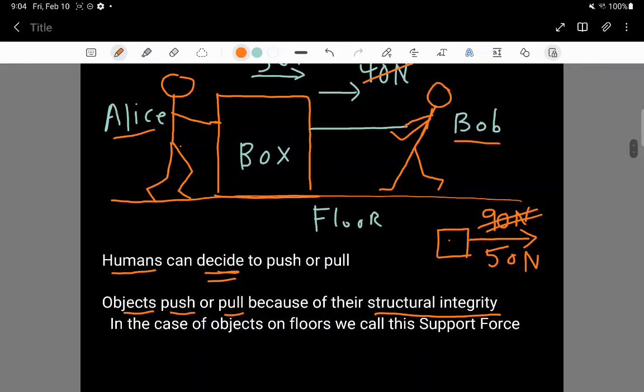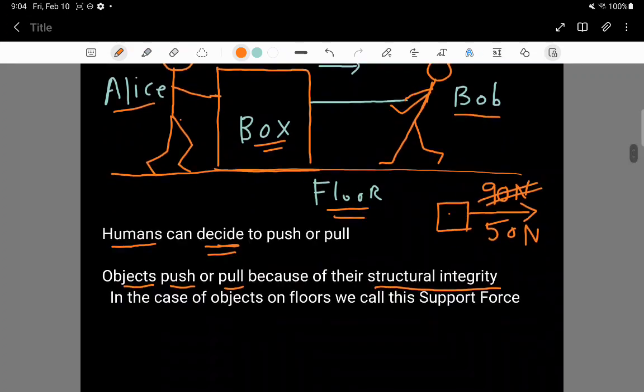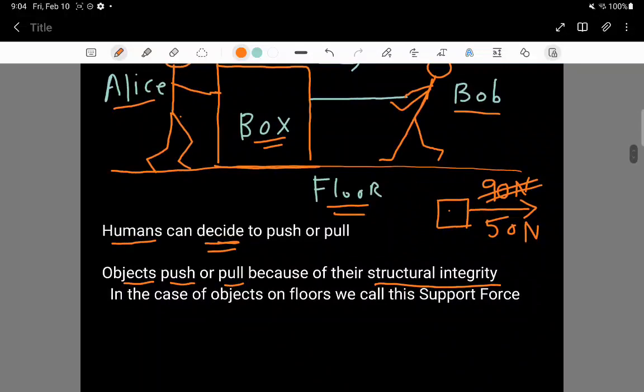For example, notice that the box is not going to fall through the floor. The floor is going to hold the box up, because there's another force on the box actually that's pushing it down into the floor, and that's called the weight force. But the floor is pressing upwards on the box to support the box against the weight force.